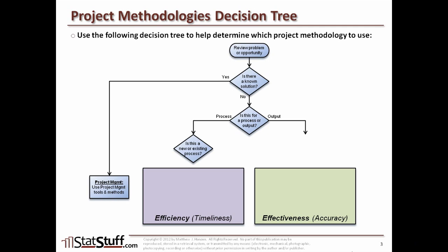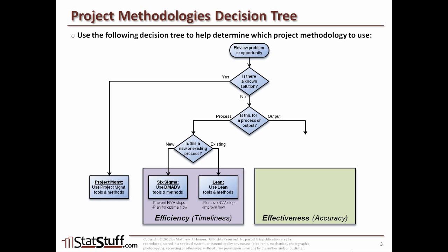The next question we might ask is: is this for a new or existing process that we're focusing on? If it's for a new process, then we would use the Six Sigma methodology of DMADV, where there's a certain set of tools and methods used for helping to build a new process. Now, if it's for an existing process, then we would use the Lean methodology and Lean set of tools in order to help us improve that existing process.